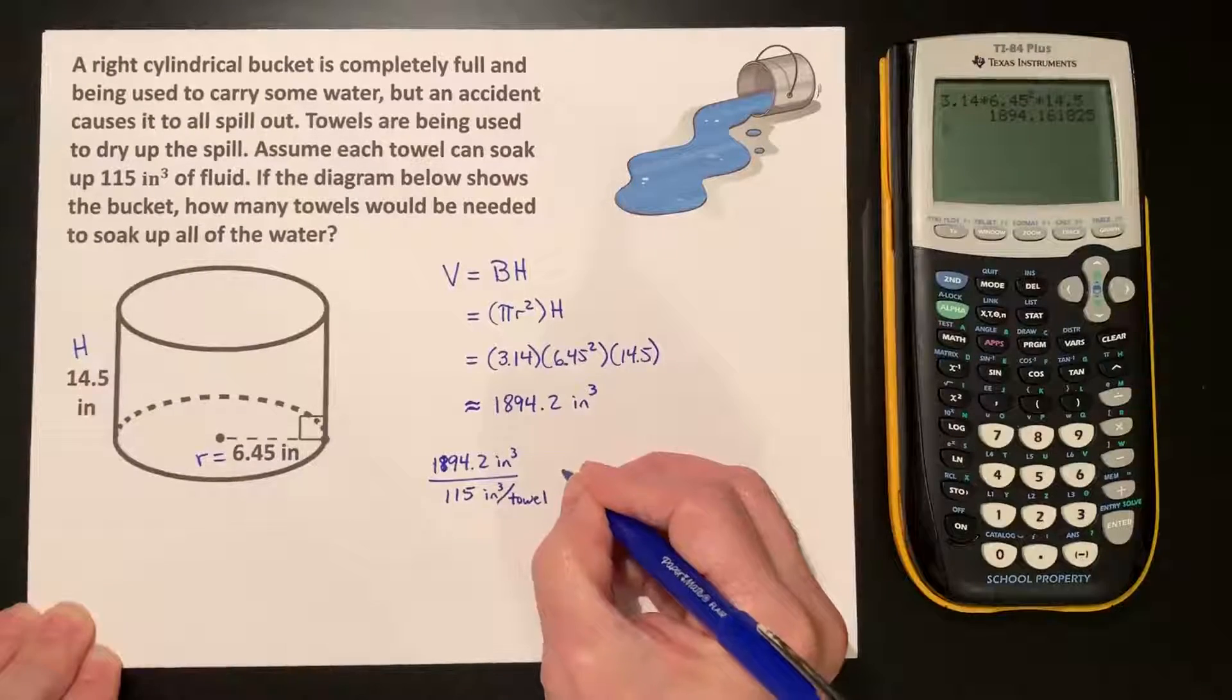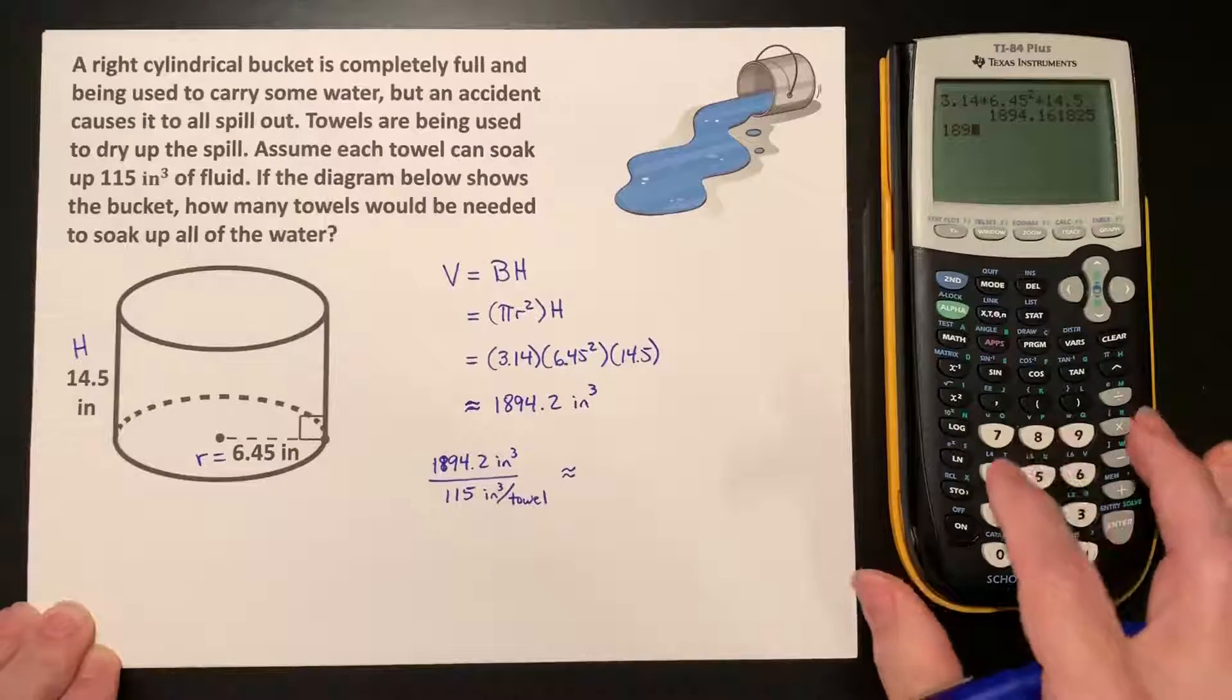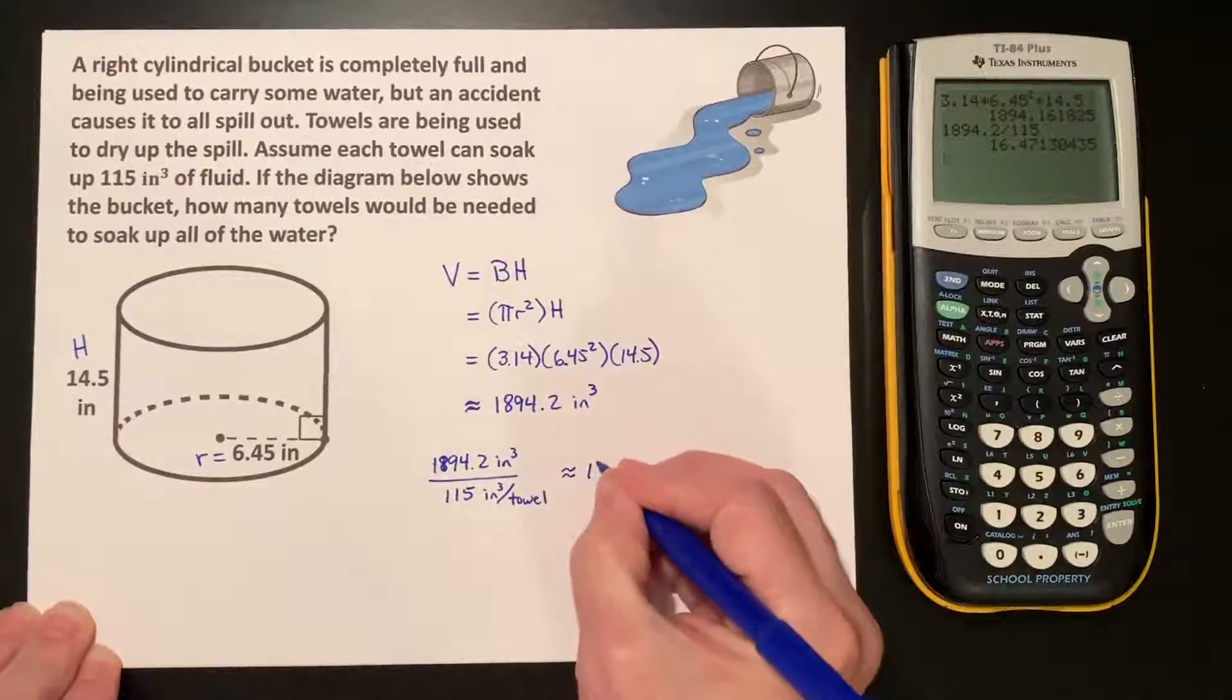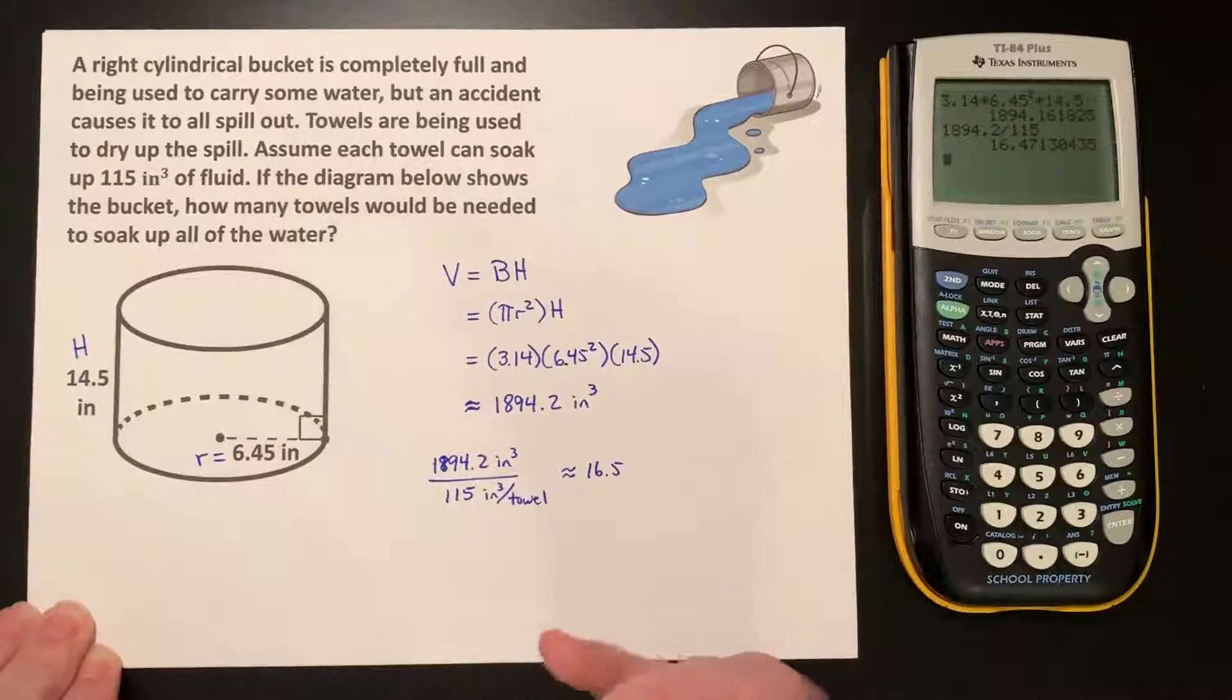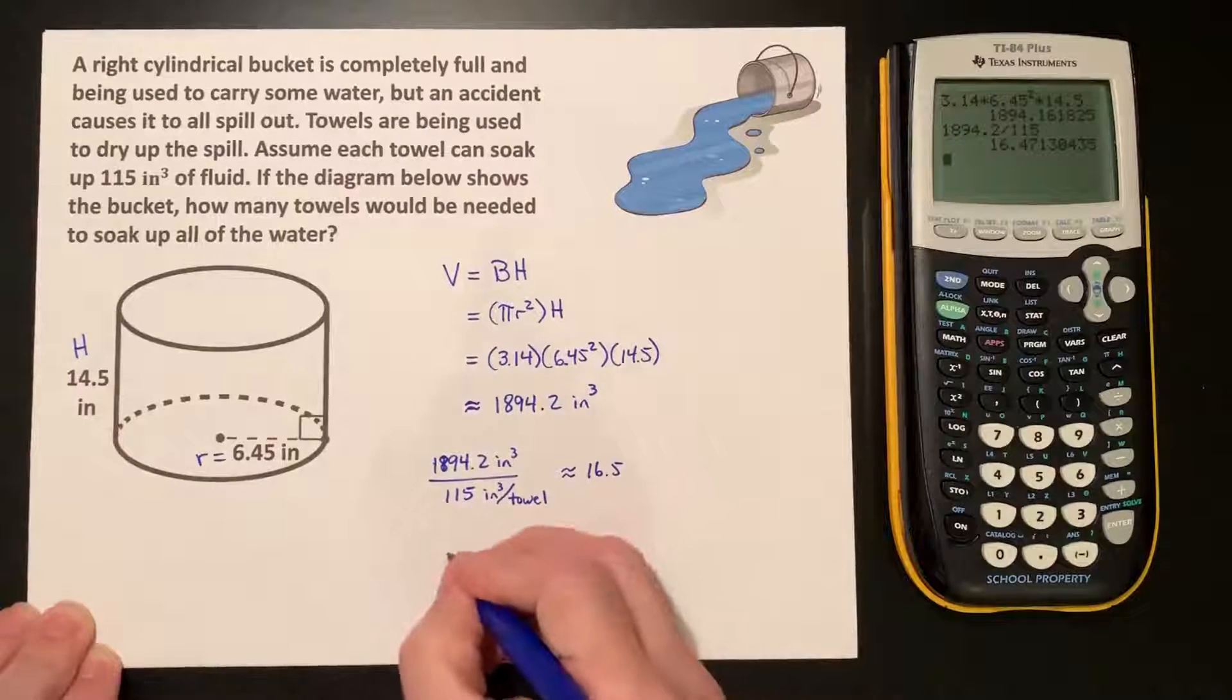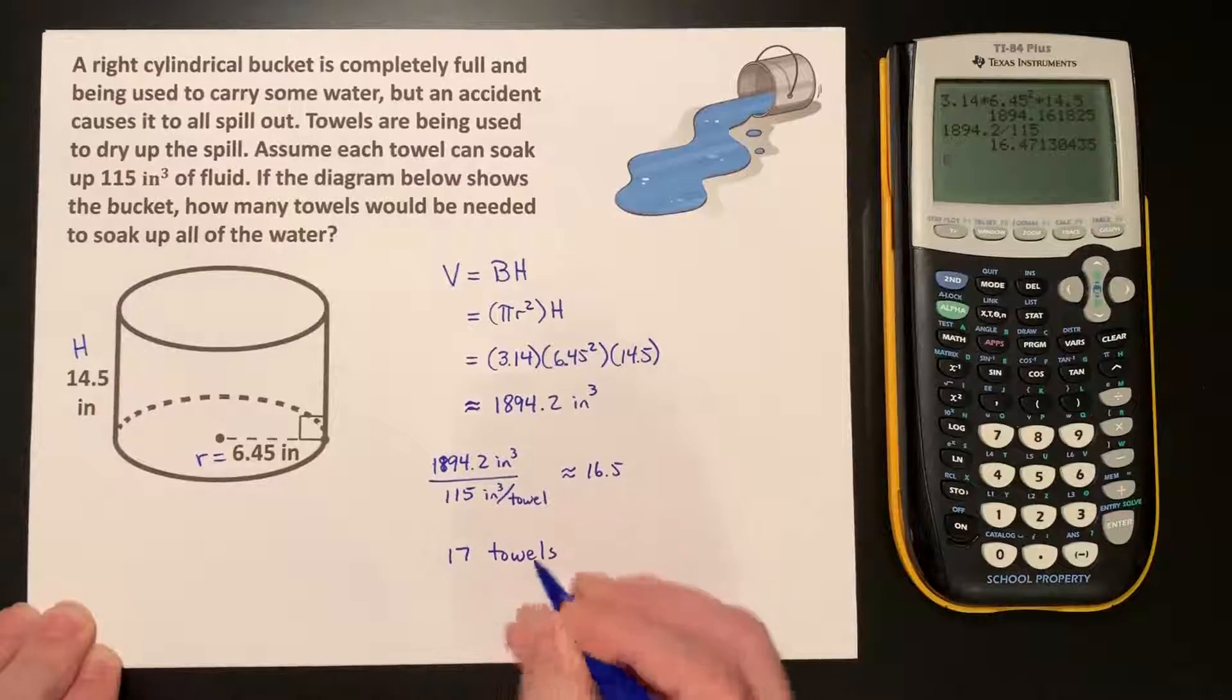And that's approximately 1894.2 divided by 115, approximately 16.5. Of course we can't get half of a towel, we need the entire towel. So we have to round up to 17 towels needed.